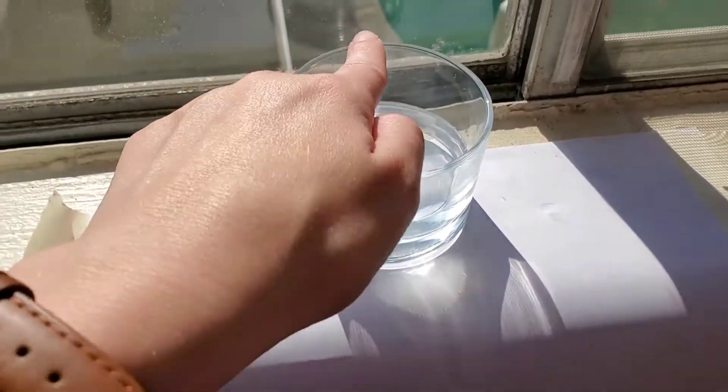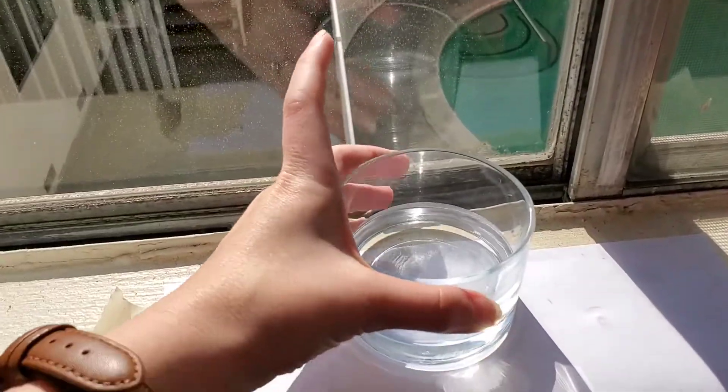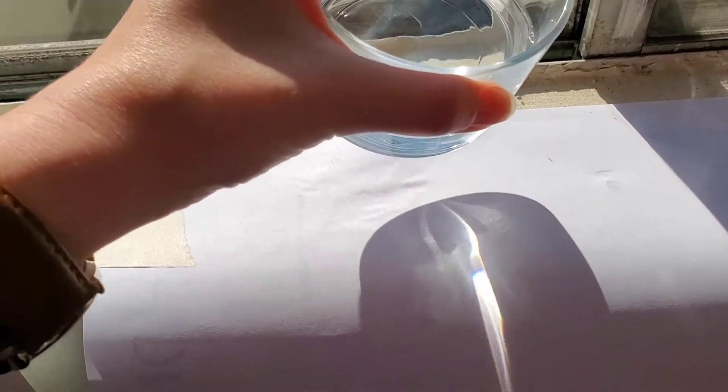Now mine was under it because the Sun's coming from up here and so it's going to travel in a straight line. So that's why mine tended to be more under my cup. That's where my rainbow is. You can see the red and the blue right there. You can really see it.